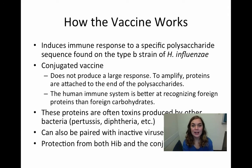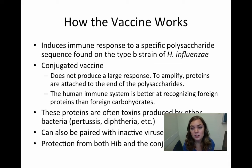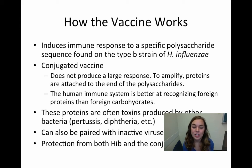The vaccine works in an interesting way compared to other common vaccines. It uses a polysaccharide sequence found on the capsule of the type B strain of H. influenzae to cause an immune response in the body. But the problem with this mechanism is the fact that polysaccharides don't produce a very large immune response. So in order to amplify this, proteins are actually added to the ends of the polysaccharides, because the human immune system responds to proteins better than polysaccharides. This pairing of polysaccharides and proteins is called a conjugated vaccine, which often provides immunity for both the protein and the polysaccharide.